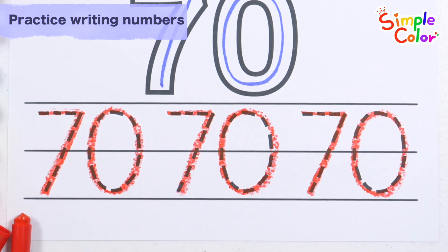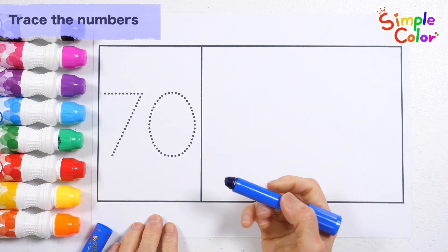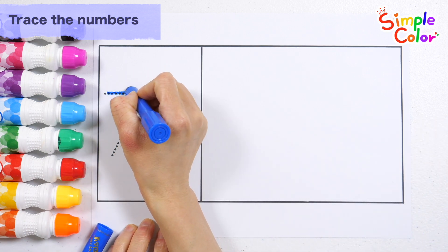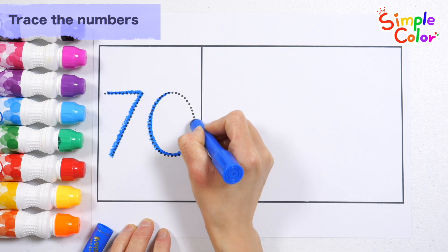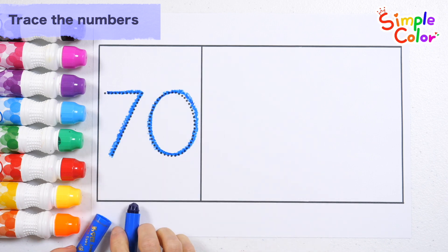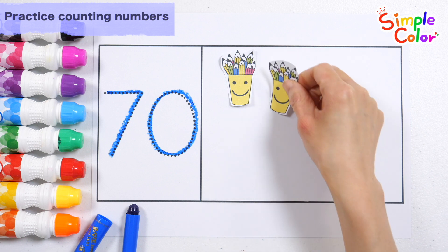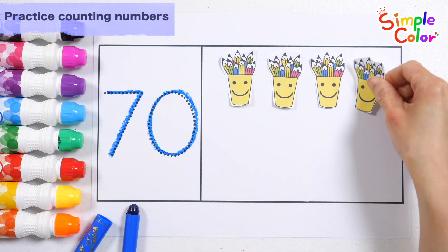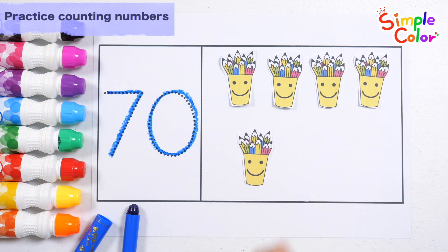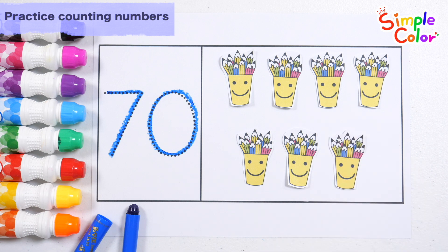70. Great job! Let's write 70 with blue crayon. 70. Shall we place 70 pictures? 10, 20, 30, 40, 50, 60, 70. 70 pencils. Great job!